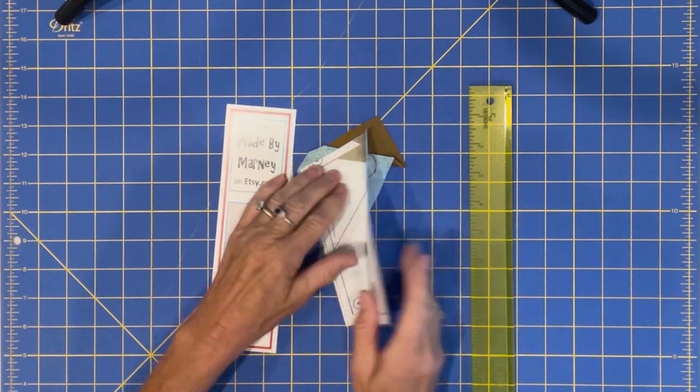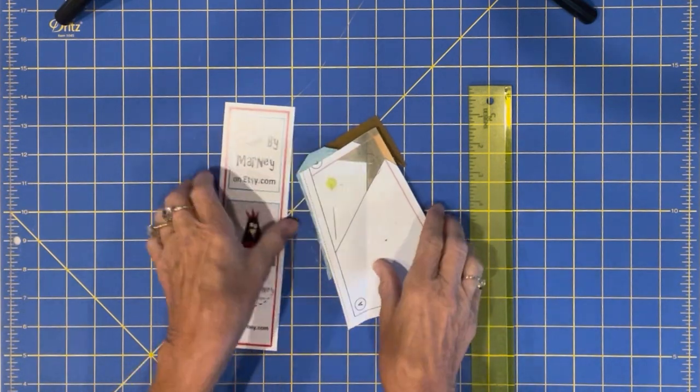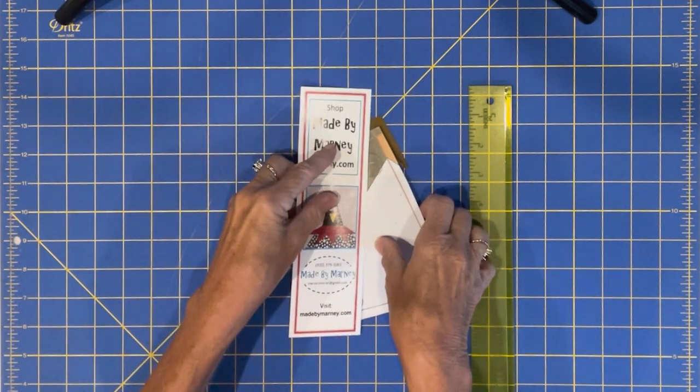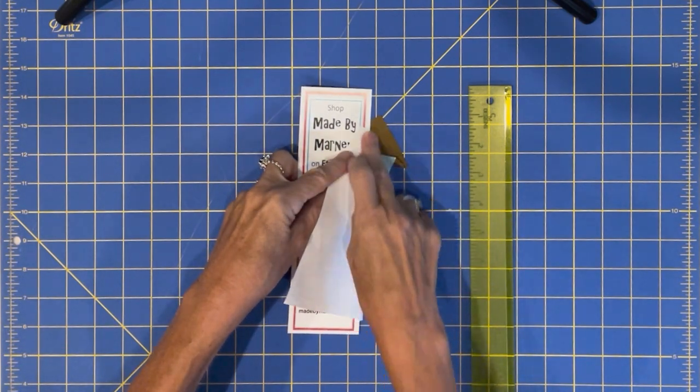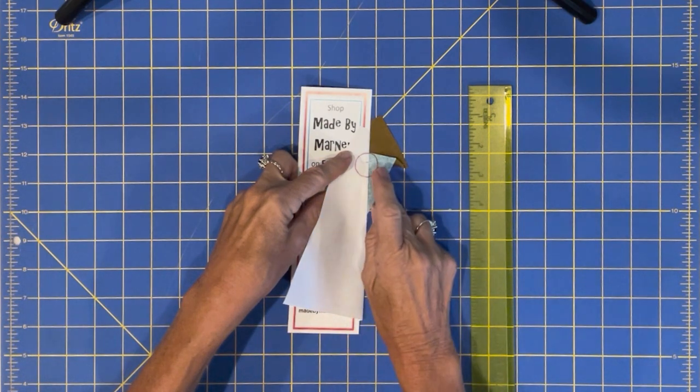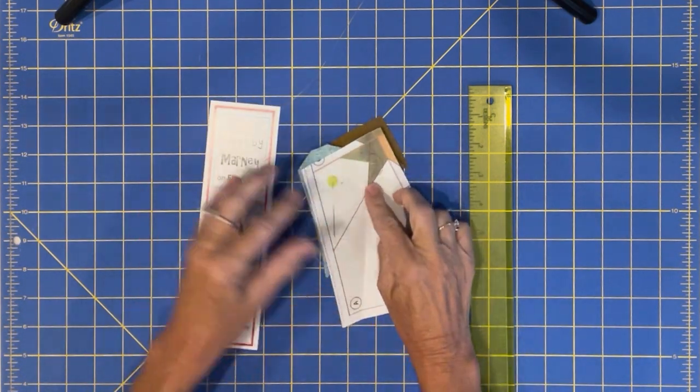So you always have to rip a few stitches, but do it with the ruler there or your cardboard. So you get a nice straight fold as you're doing your ripping out.